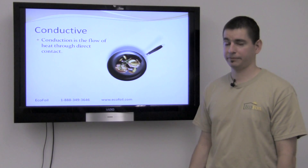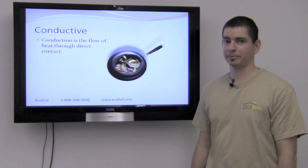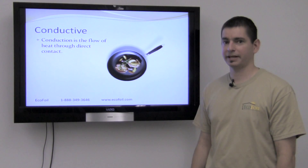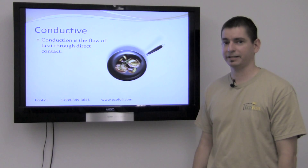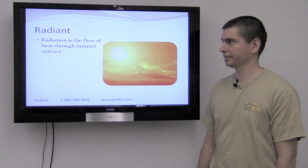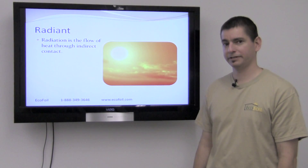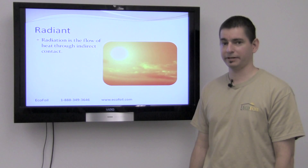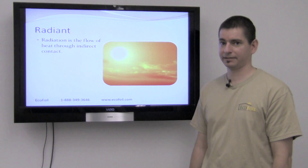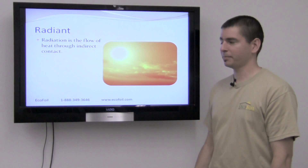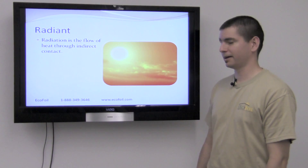Conductive heat flow is the flow of heat through direct contact. An example of this would be a hot plate or a skillet — if you were to touch that hot plate or skillet, that heat that you feel is conducted heat.